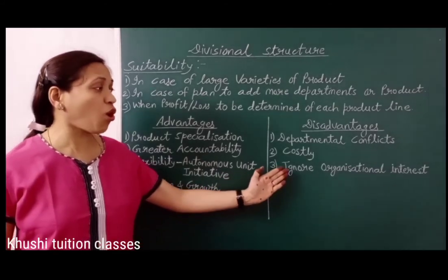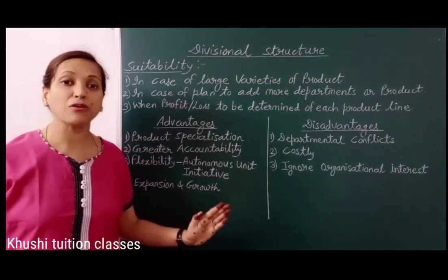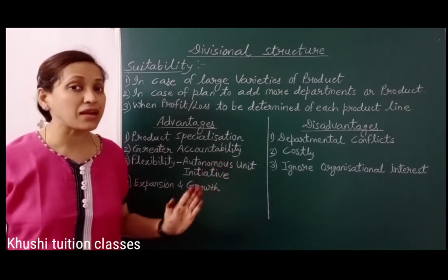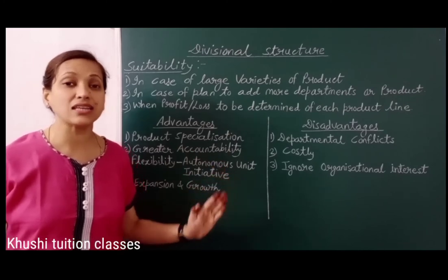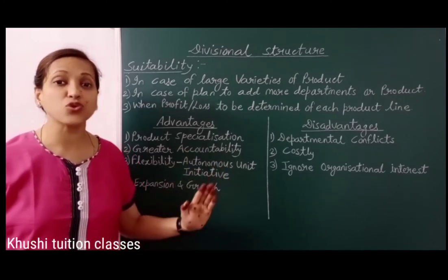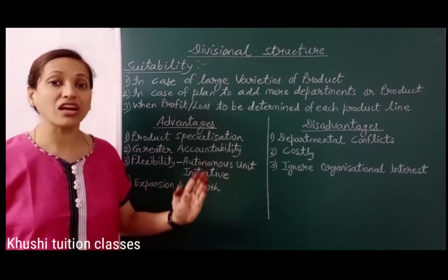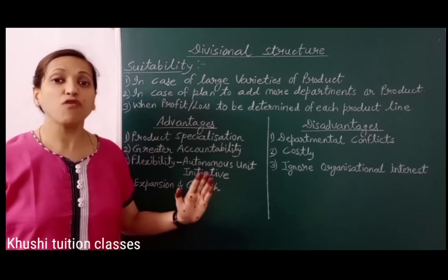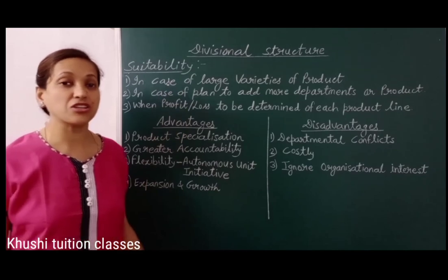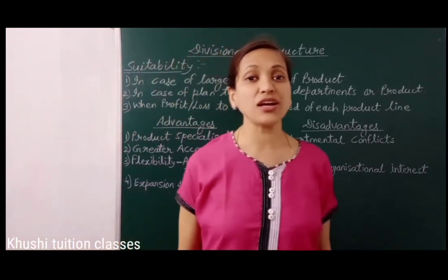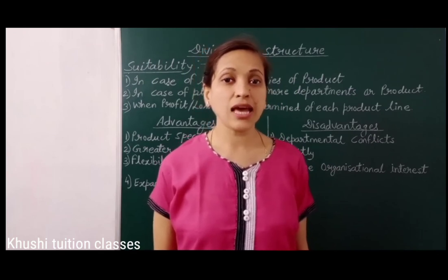The third disadvantage is ignoring organizational interest. हर departmental manager अपने department अपनी product line को best तरह से करने में लगा रहता है. वे केवल अपने ही department से related concerned रहते हैं और organizational interest को consider ही नहीं करते हैं. जिससे कई बार top management का organizational objective fulfill नहीं होता है. I hope you have understood divisional structure well. If you like this video, like, share and subscribe my channel and press the bell icon to get latest notifications. Thank you.